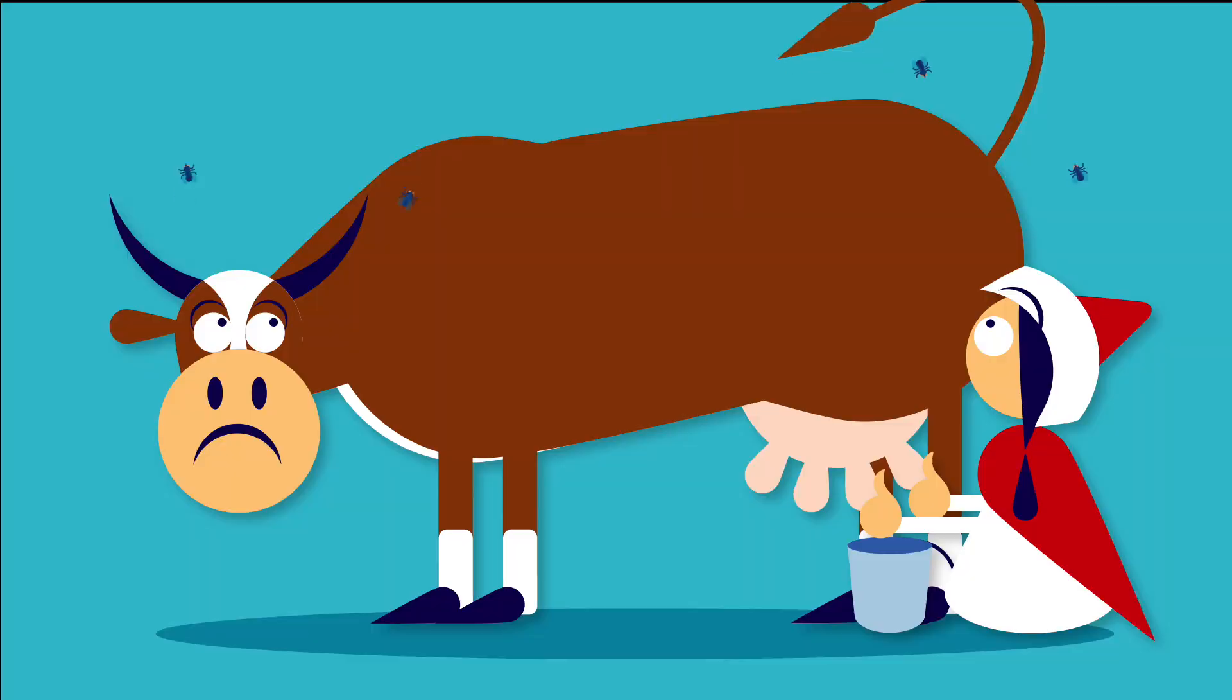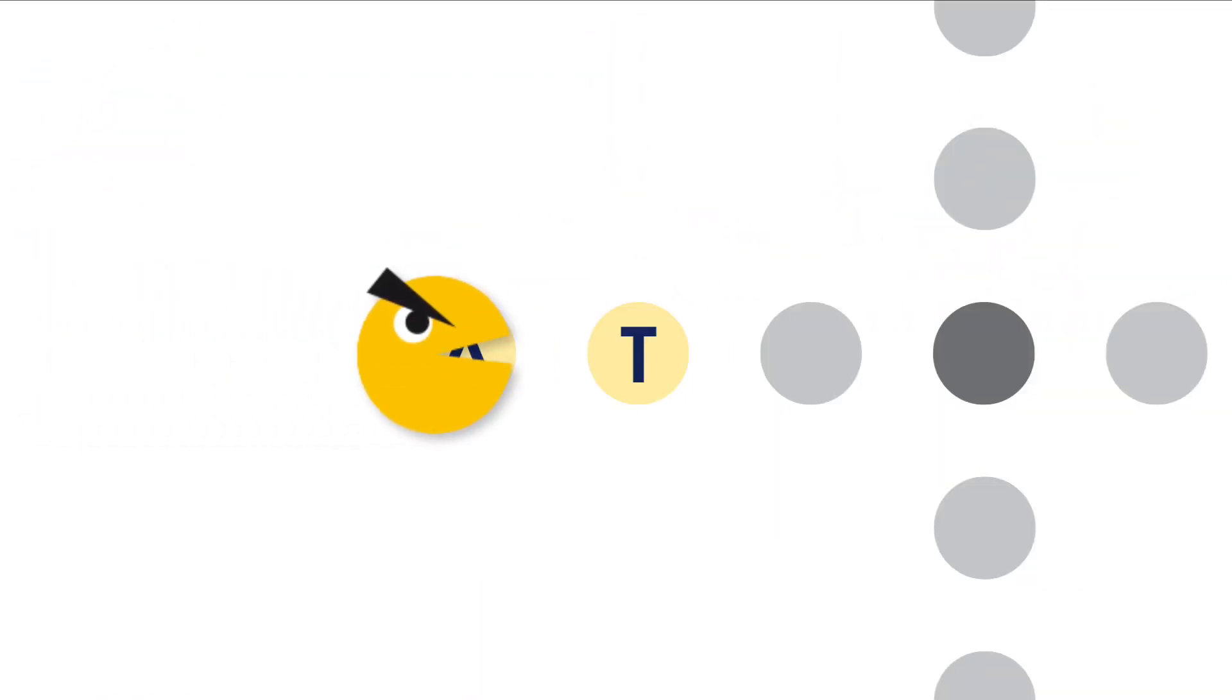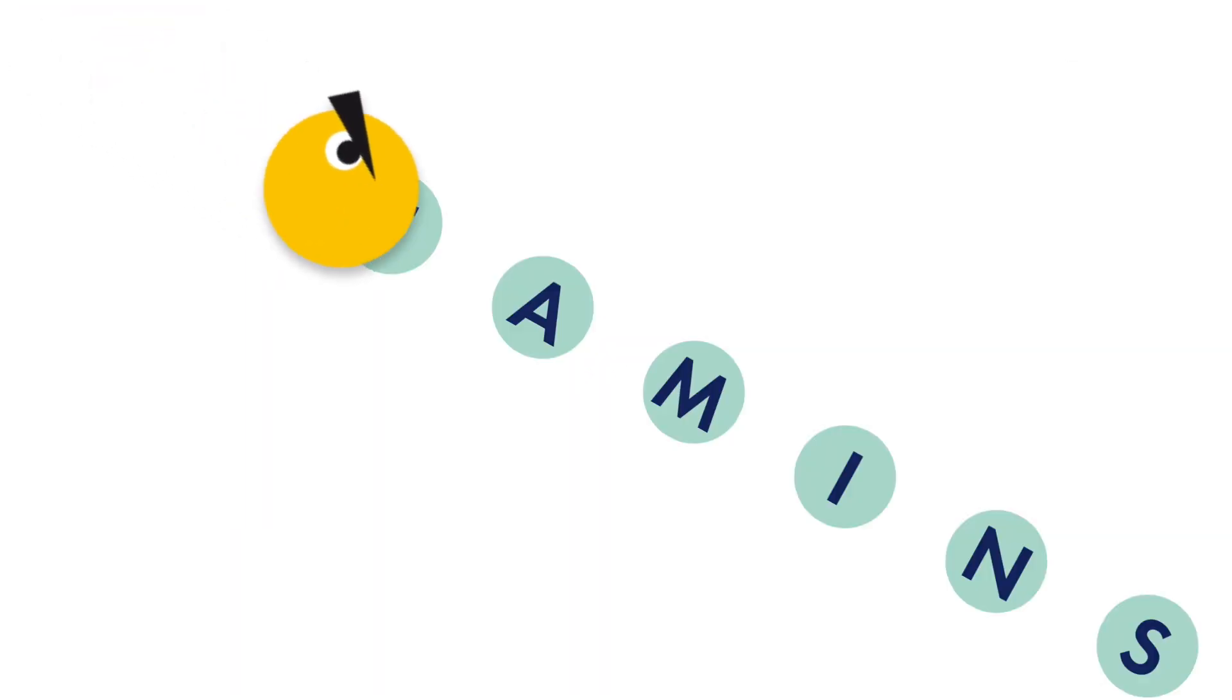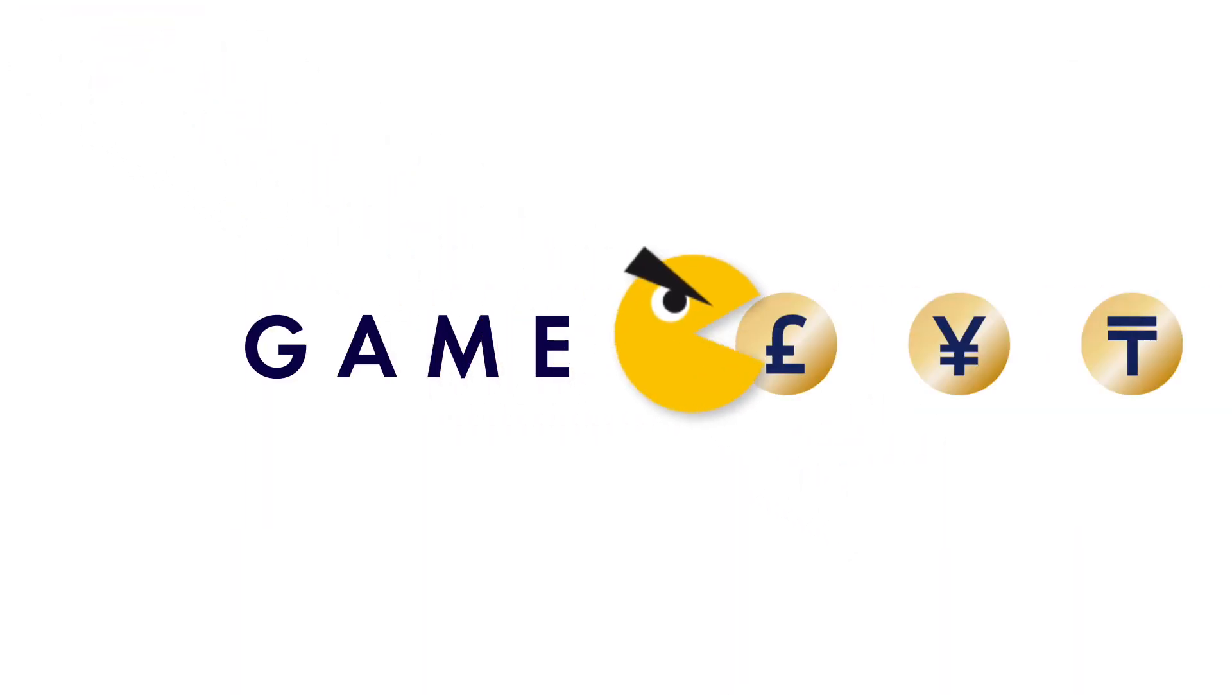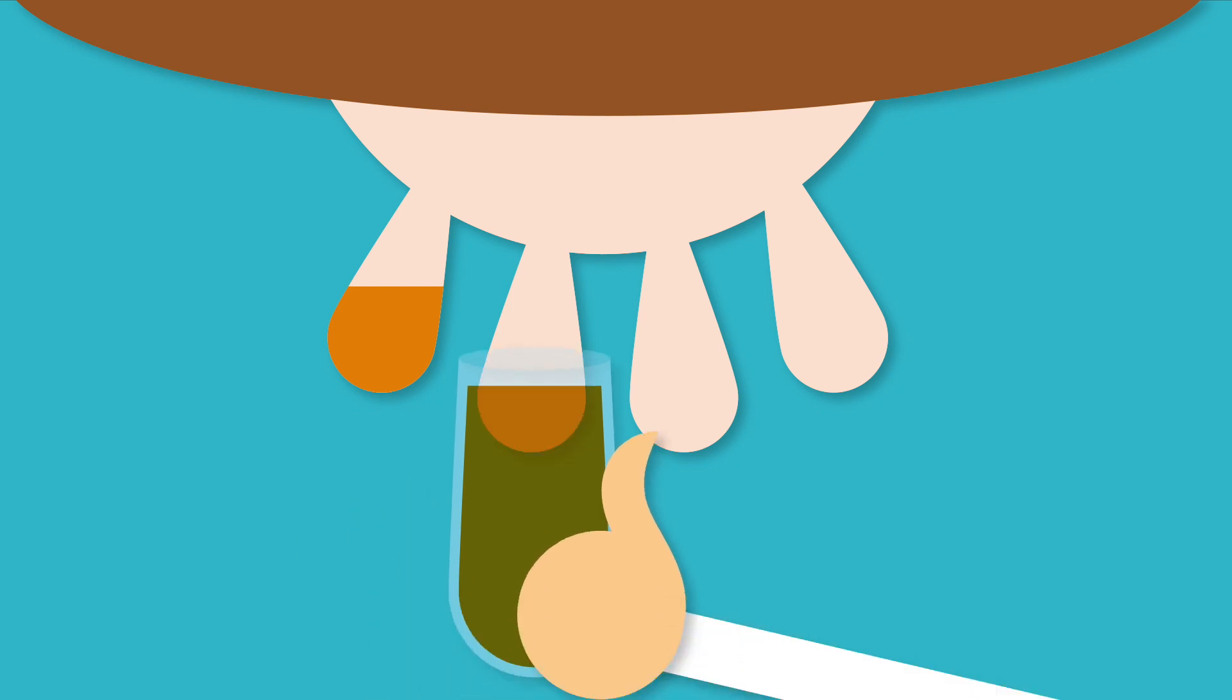Beware of flies. They contaminate the milk very quickly. Every 21 minutes, the bacteria double and they eat fat, protein, and vitamins in your milk, consuming its nutritional value and your money. After milking, disinfect every part of the udder.